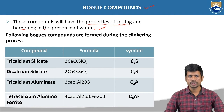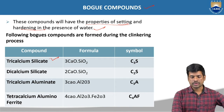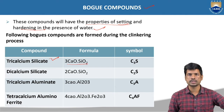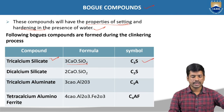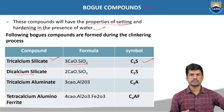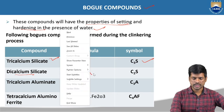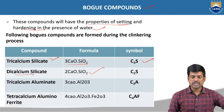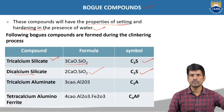The first major compound in the clinker is tricalcium silicate. The chemical formula for tricalcium silicate is 3CaO·SiO2, and the symbol is C3S. The second major component is dicalcium silicate. The chemical formula for dicalcium silicate is 2CaO·SiO2, and its symbol is C2S.